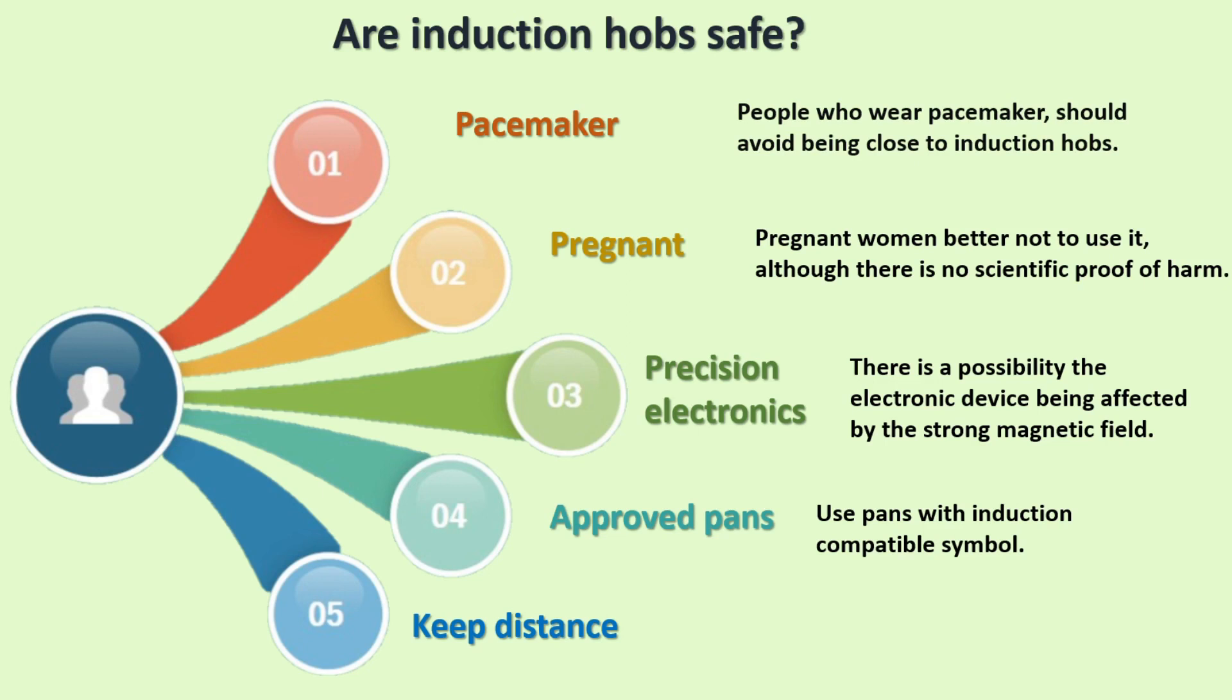Electromagnetic fields fall with distance. It could be better if you keep a little bit further from the hob when you are cooking. Thank you for watching. I hope this video is helpful to you.